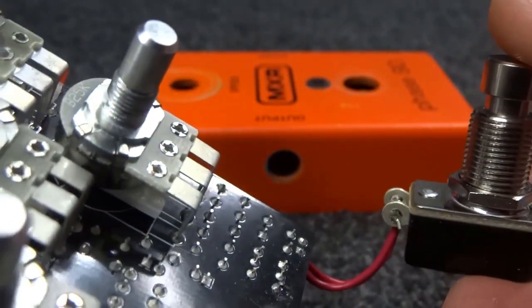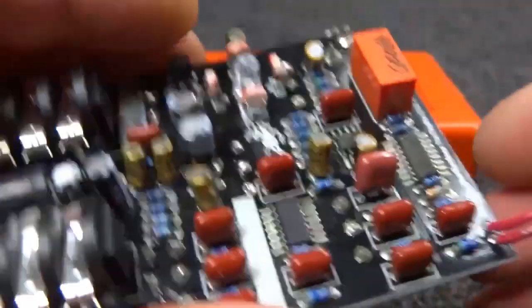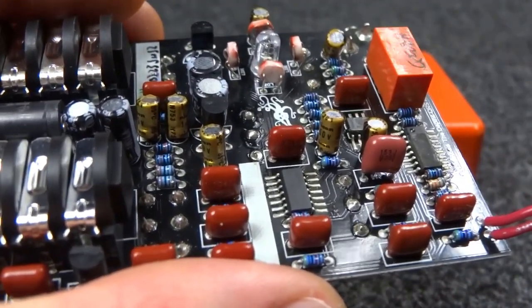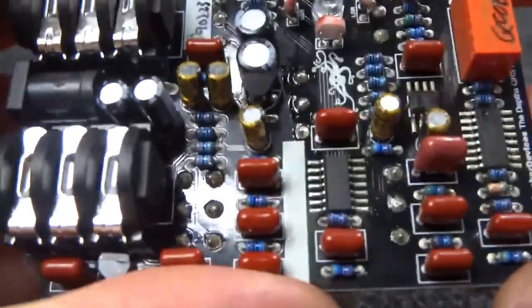For example, in this Earthquaker devices pedal we have this clickless switch which is used to control onboard relay switch which is controlled by this chip to switch pedal on and off.